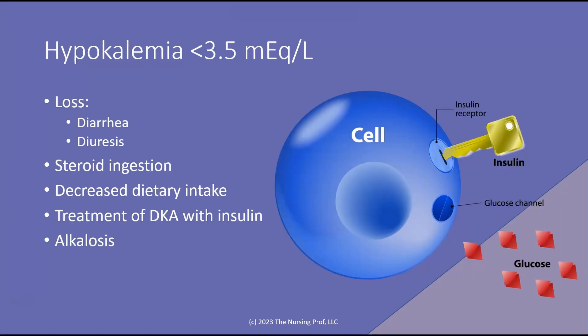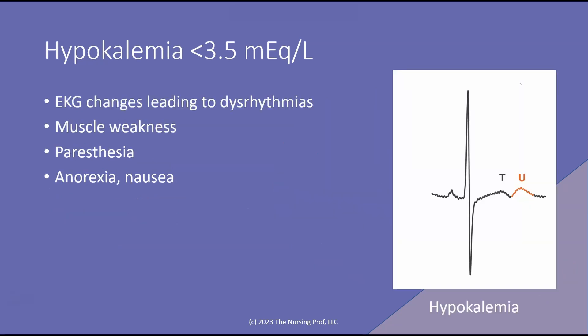Let's talk first about hypokalemia, which is a potassium level of less than 3.5 milliequivalents per liter. We end up with not enough potassium when there are losses — for example, in diarrhea and diuresis — where the patient is losing potassium and not taking in enough to replace what's been lost. Steroids can cause hypokalemia, as can decreased dietary intake. Treatment of DKA with insulin can cause hypokalemia, because insulin pushes potassium back into the cell in the same way it pushes glucose into cells. Alkalosis is another condition that can cause hypokalemia.